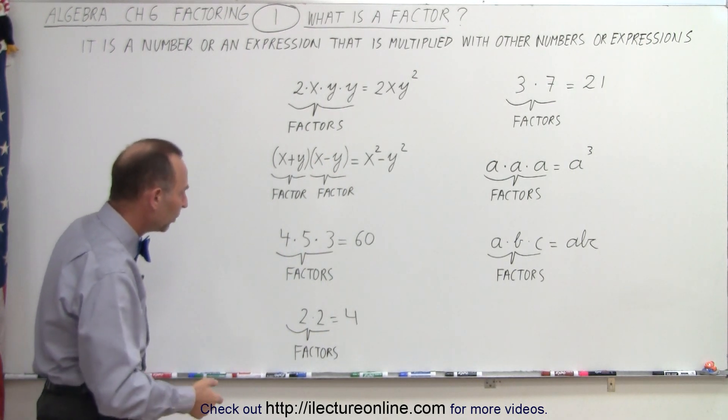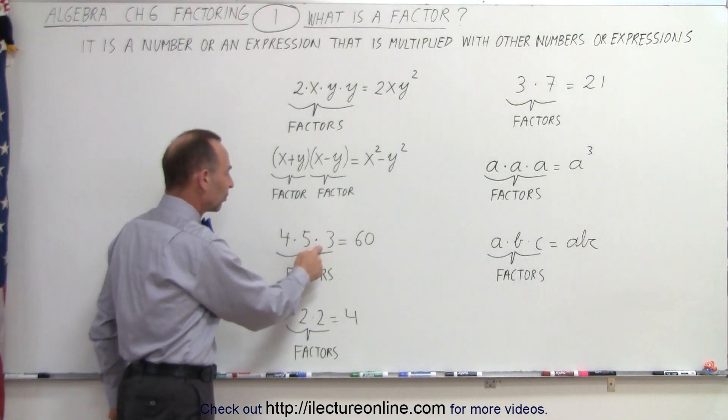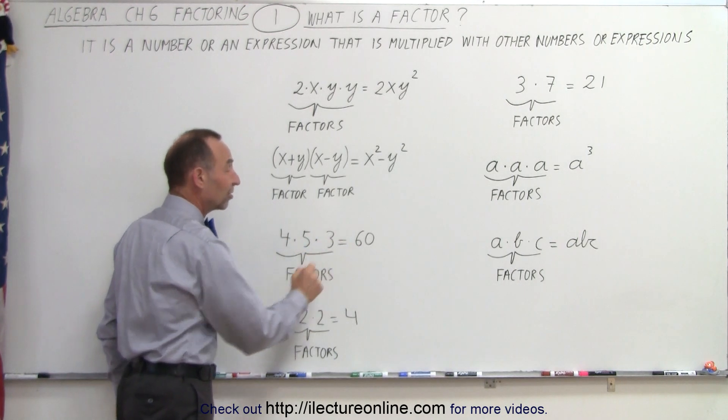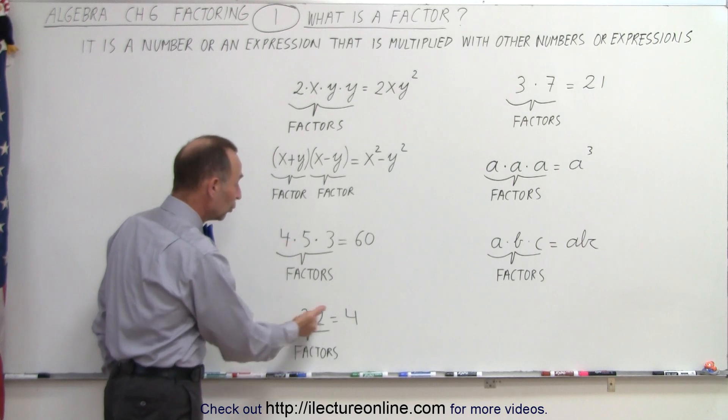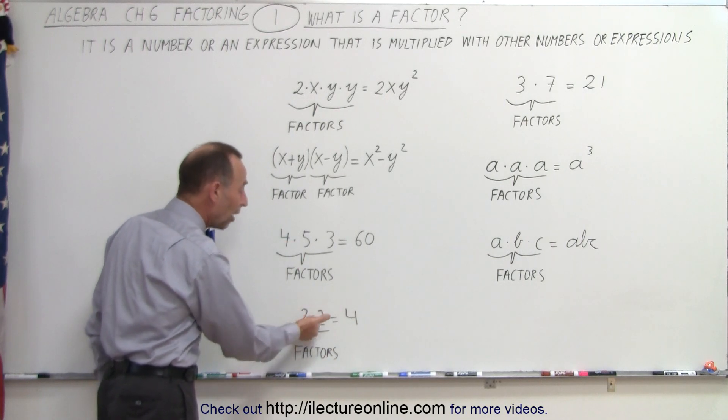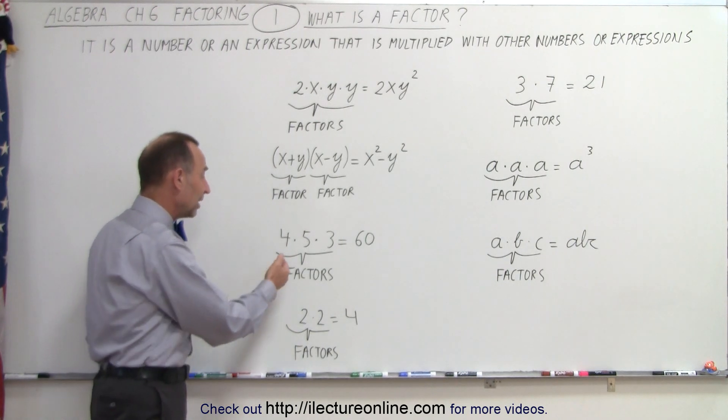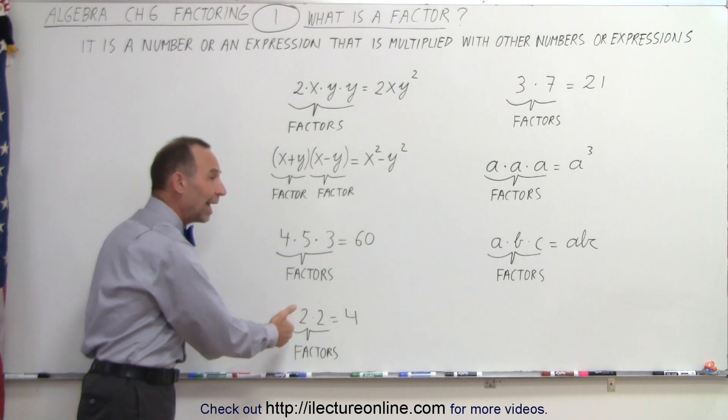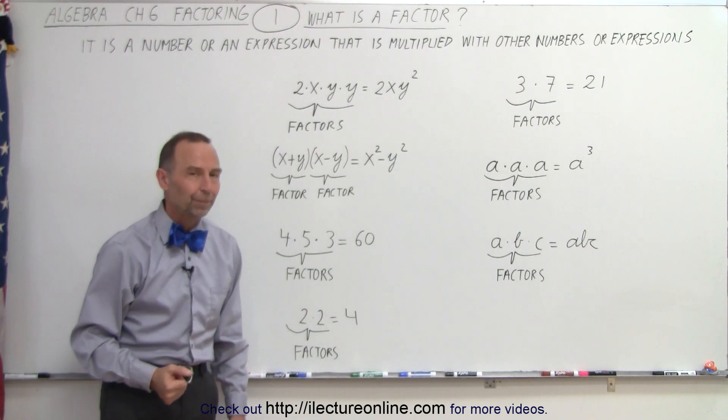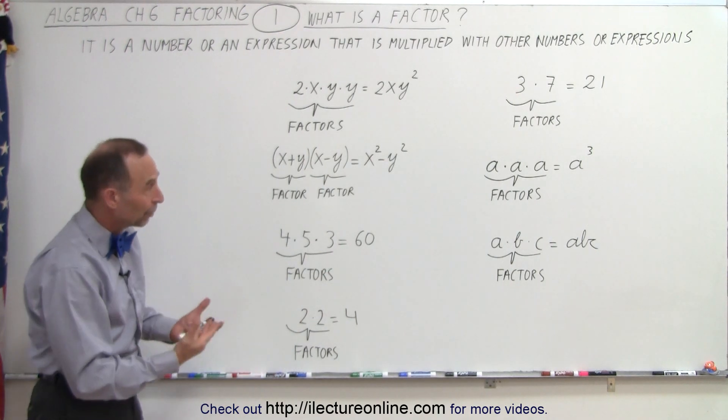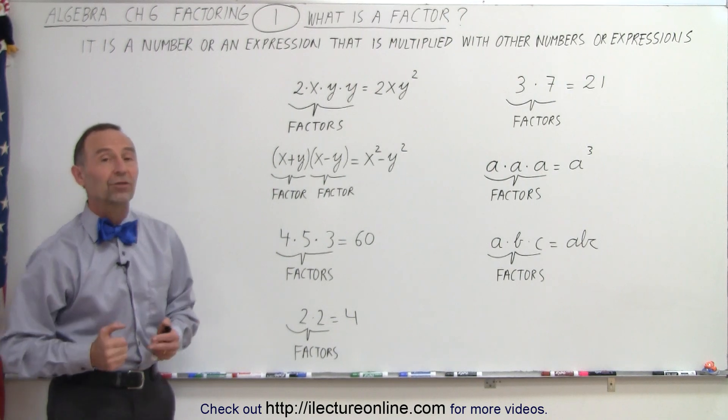Here we have some other examples. 4 times 5 times 3, those are all factors, equals 60. And notice, one of the factors, 4, can also be written as a product of its factors, 2 times 2. So you can see here that even though 4, 5, and 3 are factors, 4 itself can be written as a product of factors as well. So hopefully that helps us understand what factors are.